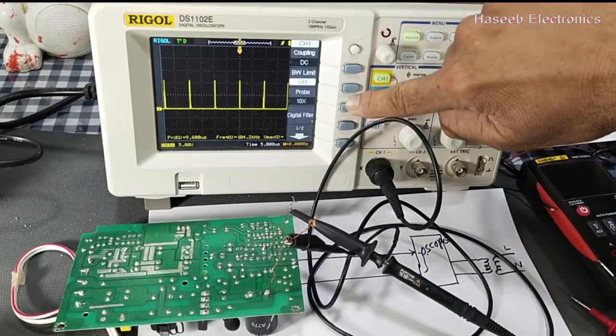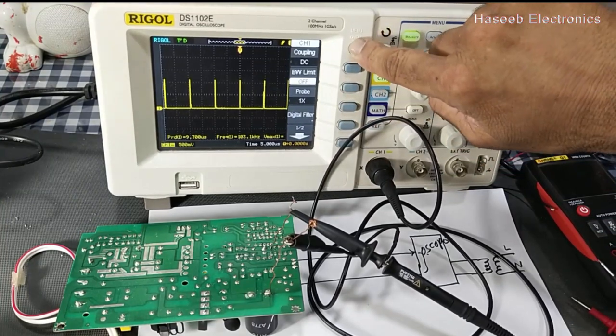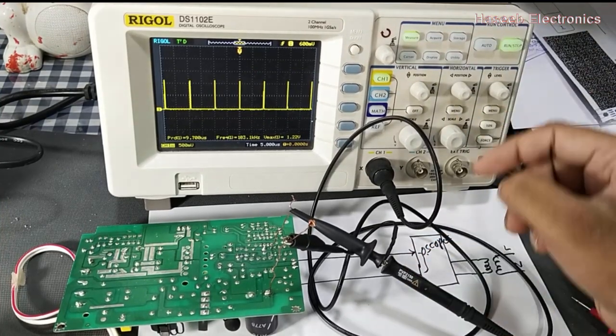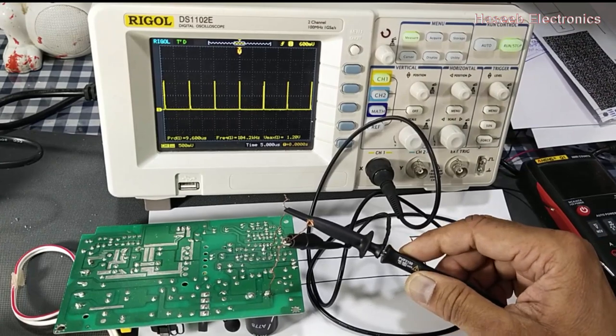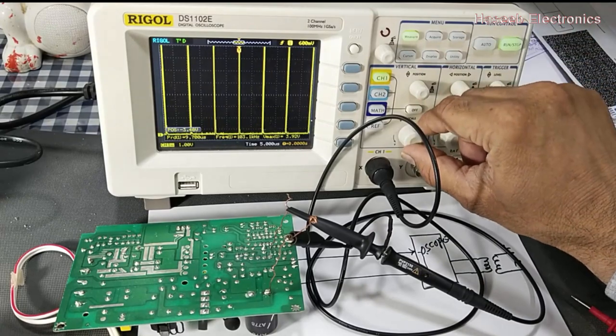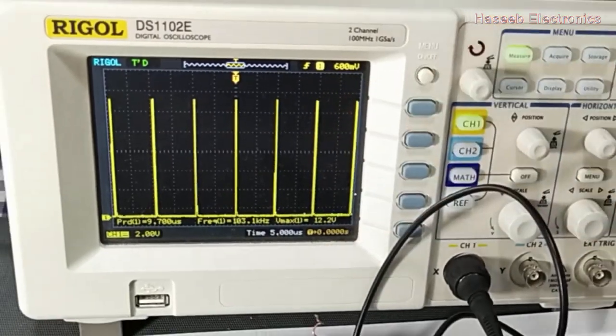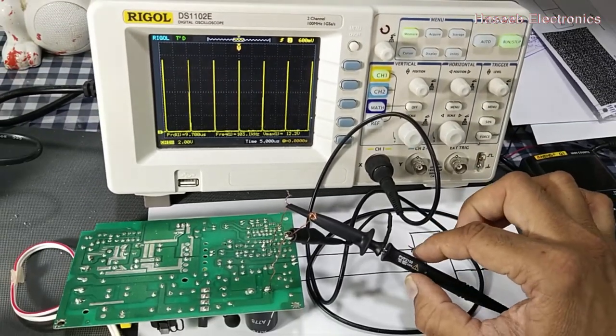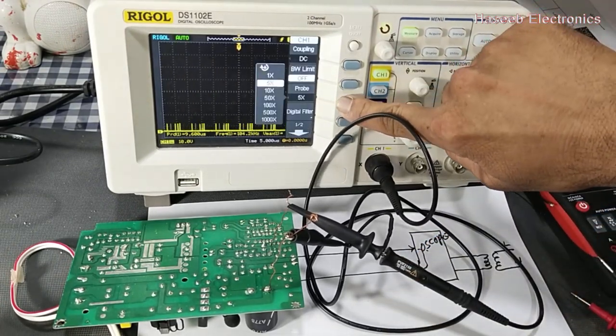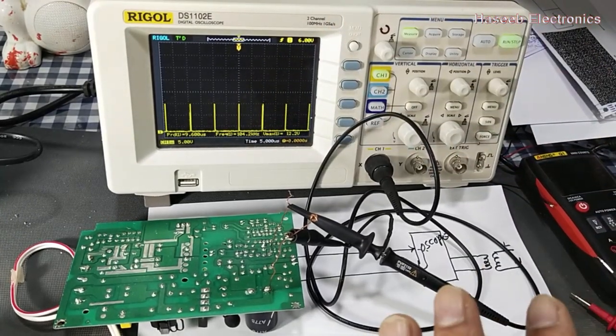If we want to use it without changing the multiplier in software, we can adjust the switch to 1x. When set at 1x it displays 12.2 volts. We can also set 10x and then set probe type to 10x in software. It will display the voltage and frequency. This is how we can test the signal.